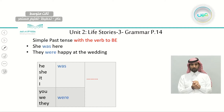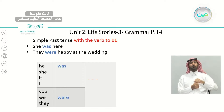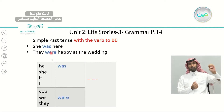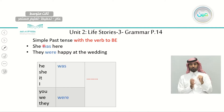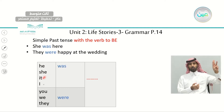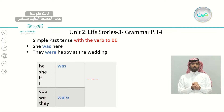Sometimes we have the verb 'to be' in the sentence instead of a main verb. For example: 'She was here.' 'They were happy at the wedding.' With the past tense, we don't say 'is' and 'are' — we use 'was' and 'were.' We use 'was' with he, she, it, and I, and 'were' with you, we, and they.